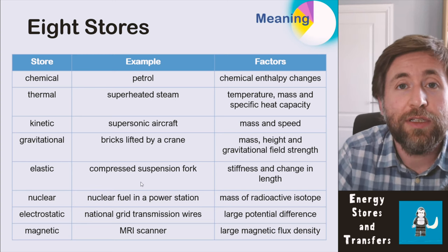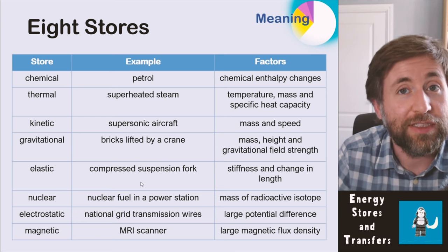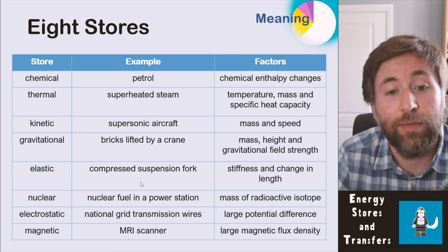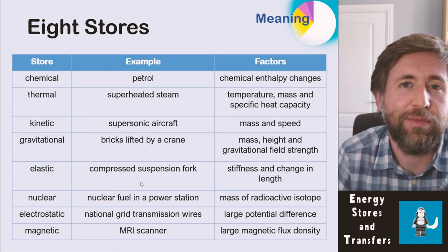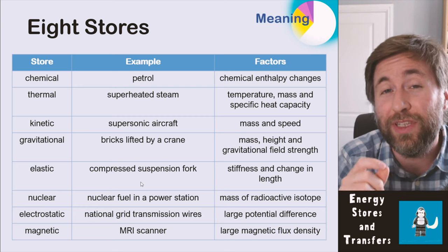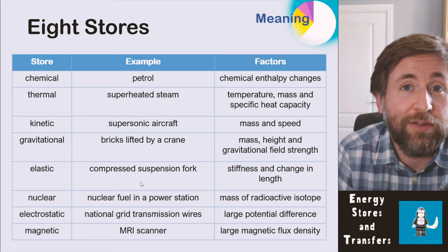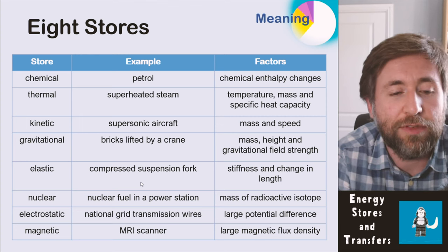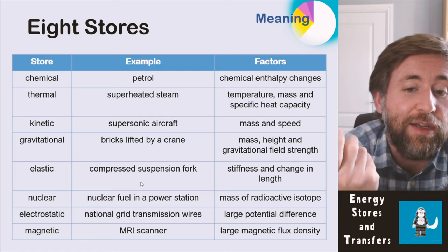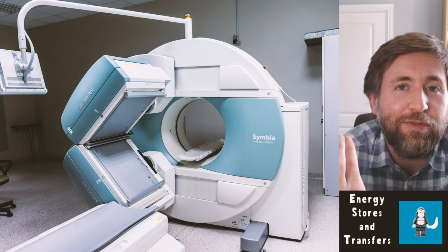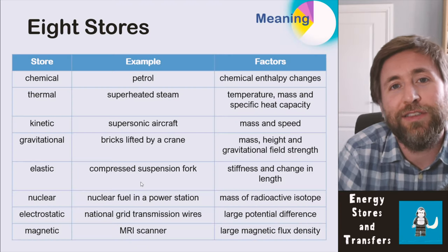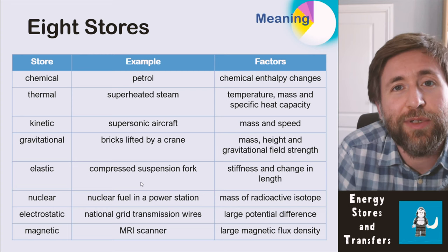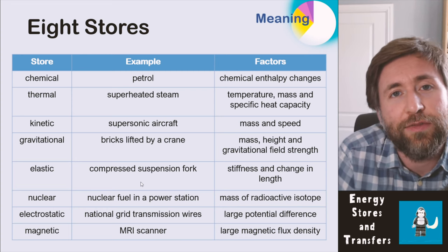If you have more of that radioactive material, you'll have a larger nuclear store. The sun is the classic example of a large nuclear store — nuclear energy is stored within the nucleus of atoms. A large electrostatic store might be the national grid transmission wires; the reason it's a large store is the large potential difference. A large magnetic store might be an MRI scanner, which has a very powerful magnet with a large magnetic flux density.